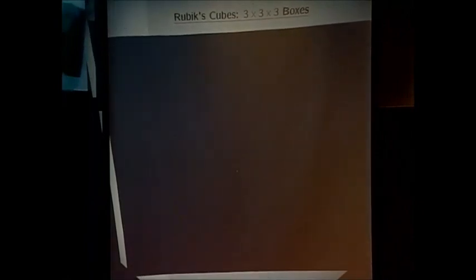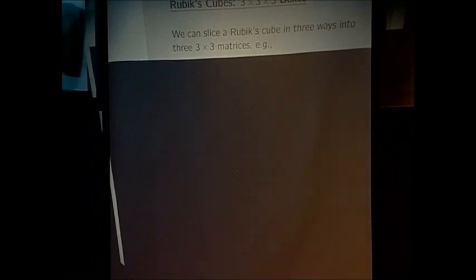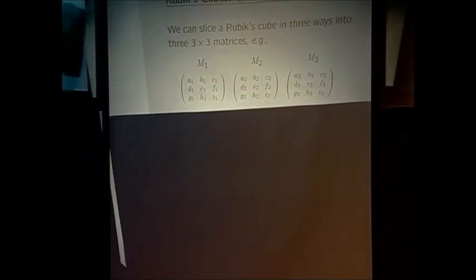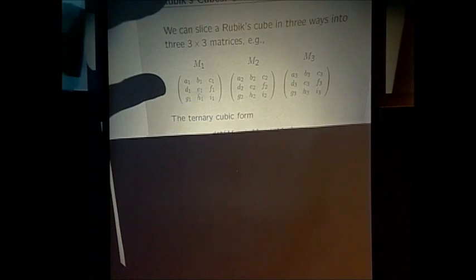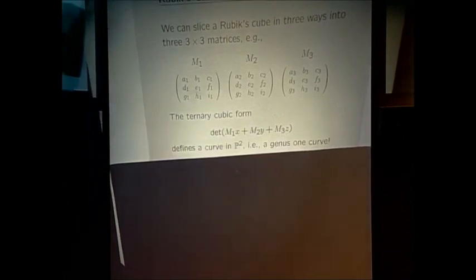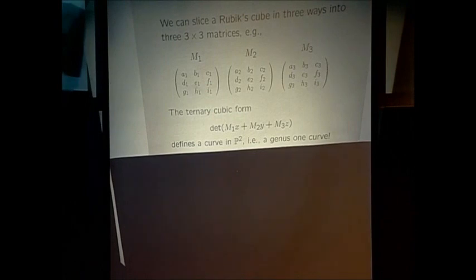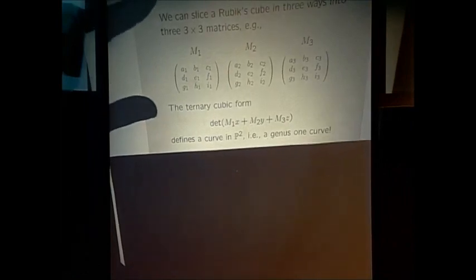Three by three by three is the other mother of co-regular spaces. If you have a Rubik's cube, you can slice it into three 3×3 matrices. You can do this in three different ways. If you have three 3×3 matrices, you multiply the first by an indeterminate X, the second by Y, the third by Z, add them, and take the determinant. When you do that, you get a ternary cubic. So any 3×3×3 matrix spits out three plane cubics.